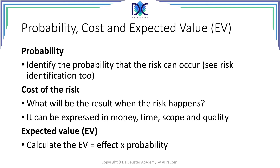Probability, cost, and expected value: the probability is the percentage or the chance of occurrence of a risk. It is very important to estimate that probability correctly. We have to look at the cost of the risk — what will be the result when the risk happens — and we can identify that in different parameters: time, money, scope, quality. To calculate the expected value, we have to multiply the effect with the probability.